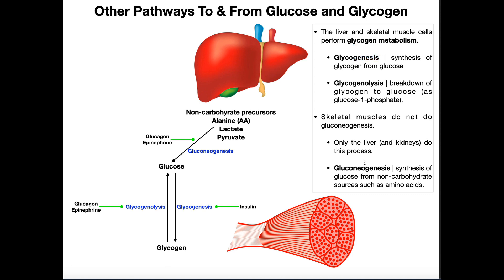Here we also see the suffix genesis in gluconeogenesis. This means that we are going to be making more glucose. The neo means it's new glucose from non-carbohydrate sources.